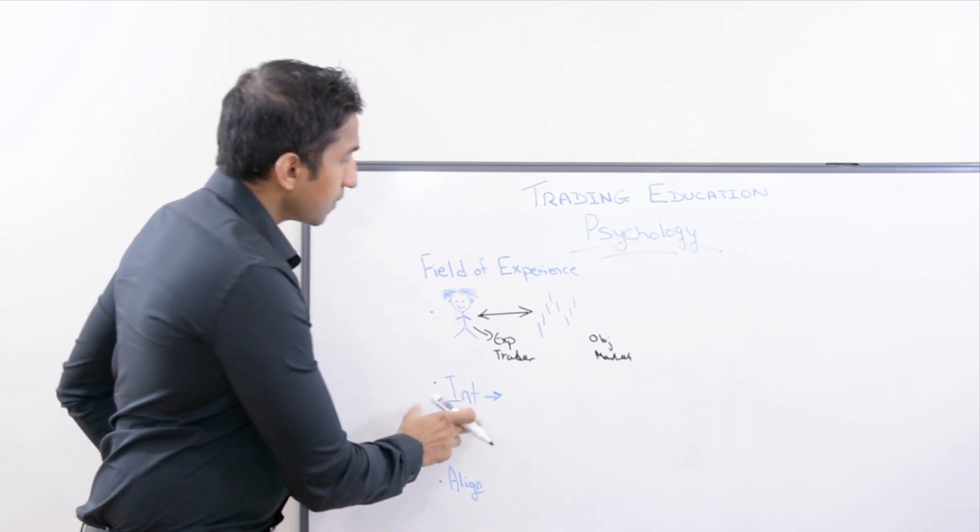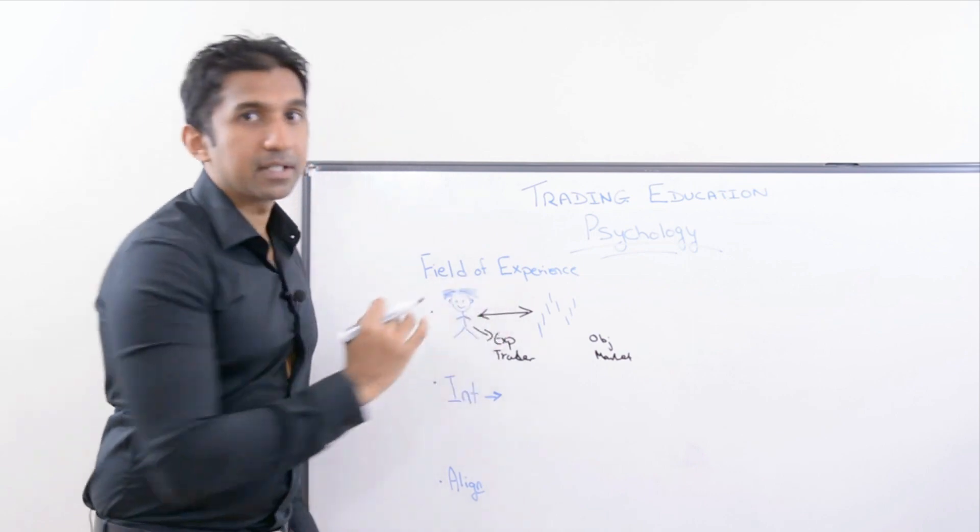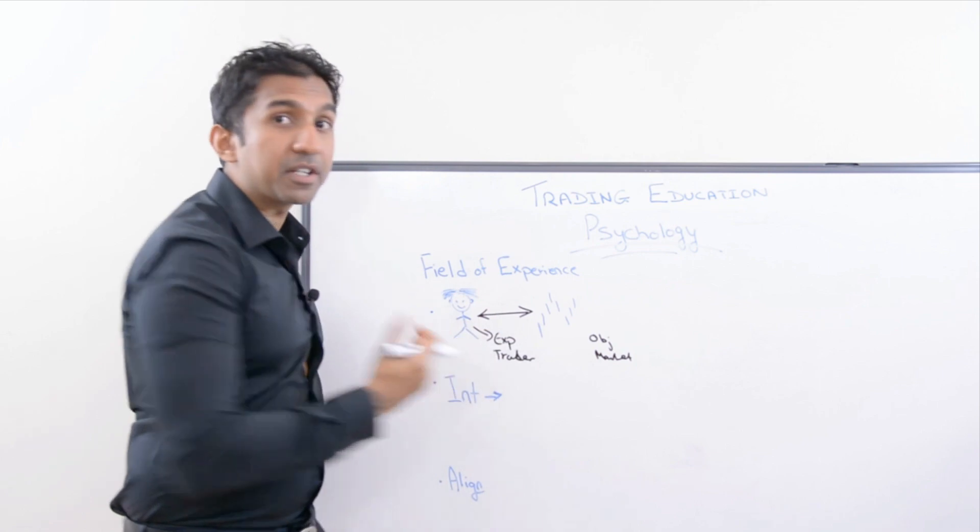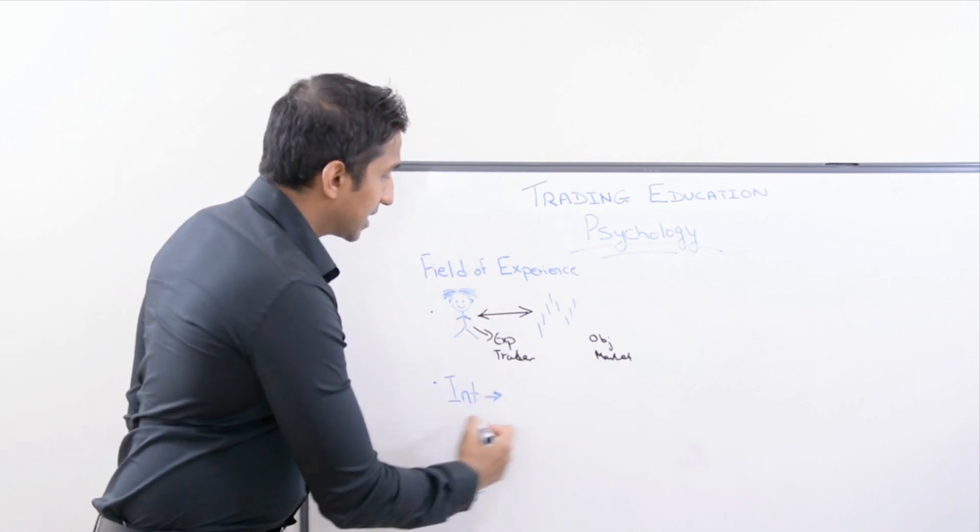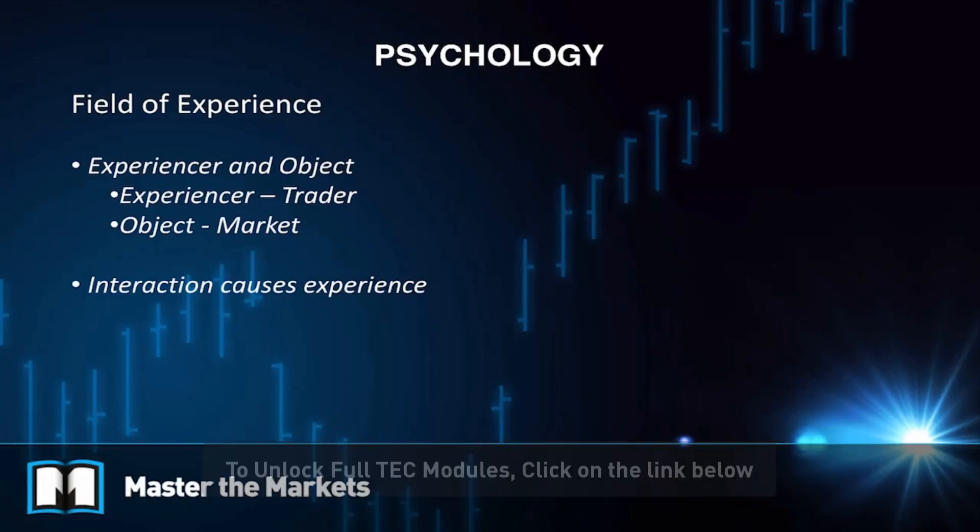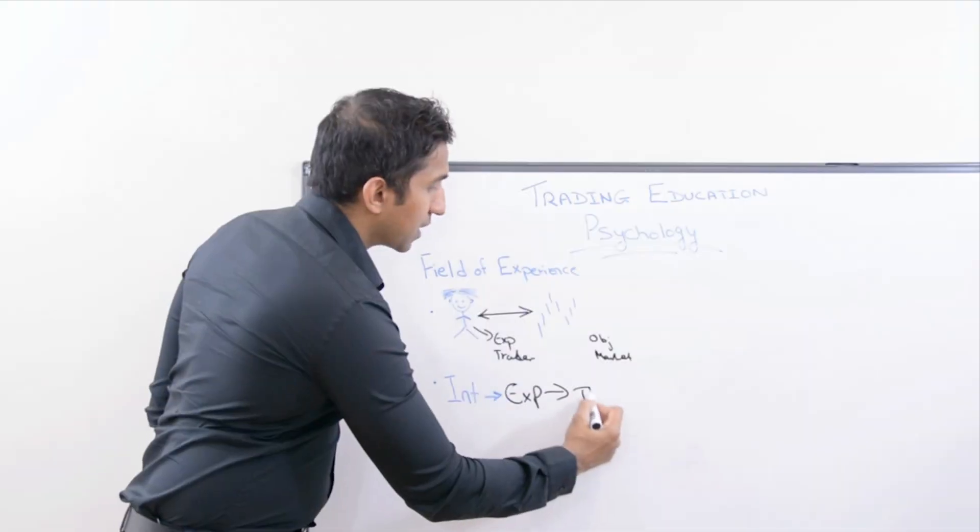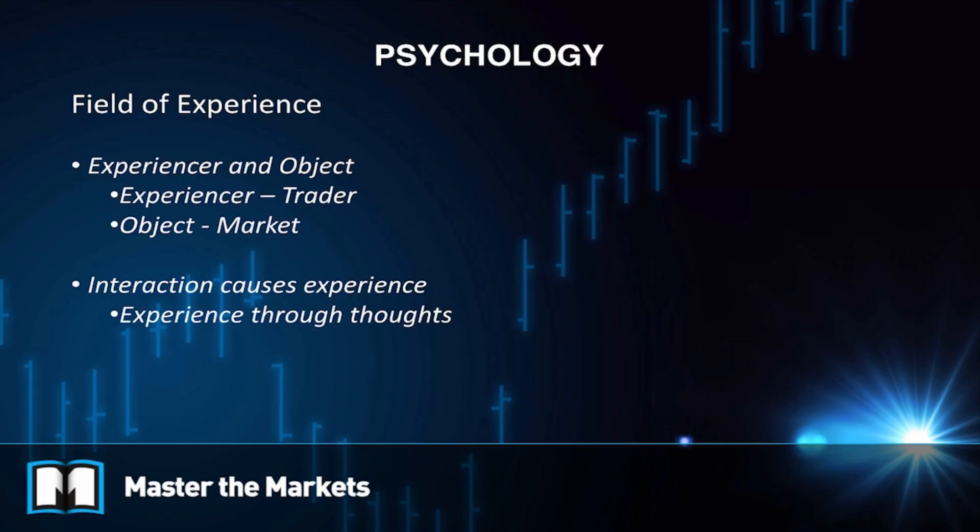So for this field of experience to occur, the interaction must happen between, in this example, between the trader and the market. He must be seeing it. That's why we say the interaction. This interaction then will create your experience, and how is that experience created? As we saw before, in the mind, through the thoughts and the two types of thoughts that occur is the emotions versus the intellectual thoughts.